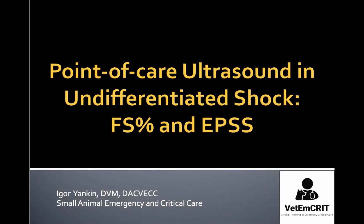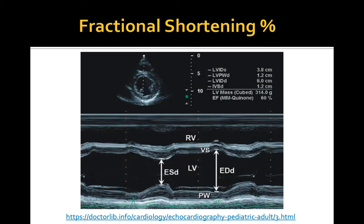During this lesson, I will talk about fractional shortening and E-point septal separation as a more objective way to assess left ventricular function. To obtain fractional shortening, you will need to get a right parasternal short or long axis view and place the cursor across the left ventricle just beyond the tips of the mitral valve leaflets and between the papillary muscles in the M-mode on the short axis view. The resultant M-mode tracing allows measurements of the chamber diameter in both systole and diastole.